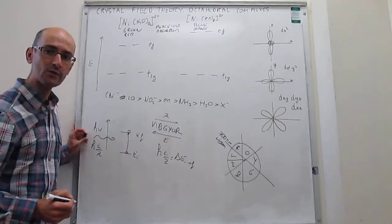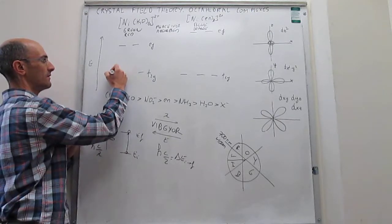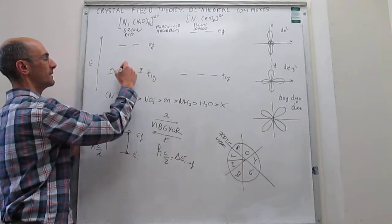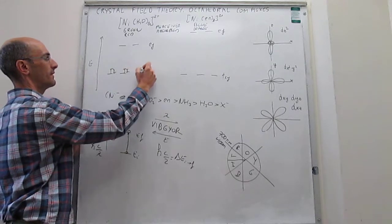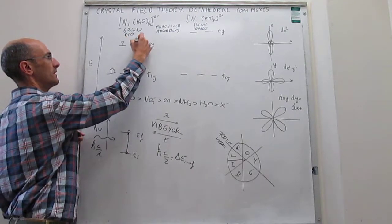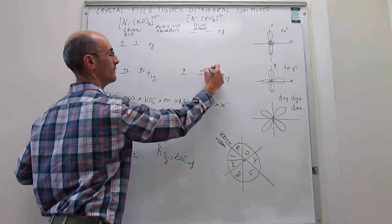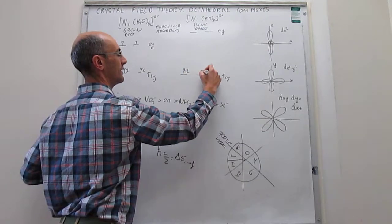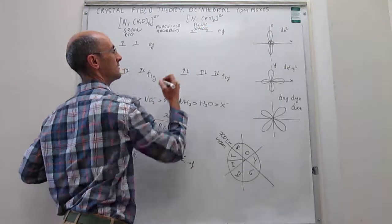If we now consider that nickel is a d8 transition metal, the electronic occupation would be like this: three, four, five, six, seven, eight. And then for the tris-ethylenediamine complex, you'll have that.